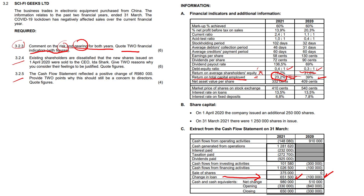Now let's look at question 3.2.4. Existing shareholders are dissatisfied that new shares issued on 1st April 2020 were sold to the CEO. Warning bells must ring because when they gave you her name — CEO Ida Shark — you quickly begin to realize where this question is going. Give two reasons why you consider their feelings to be justified.